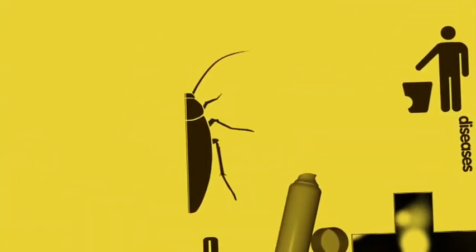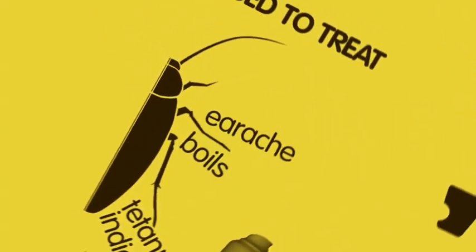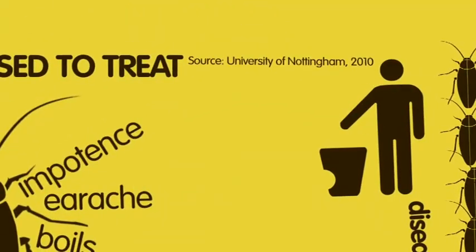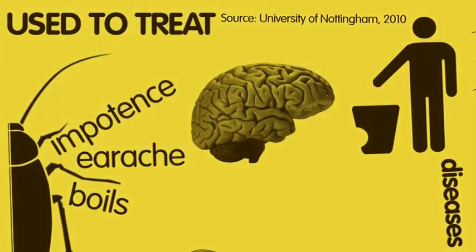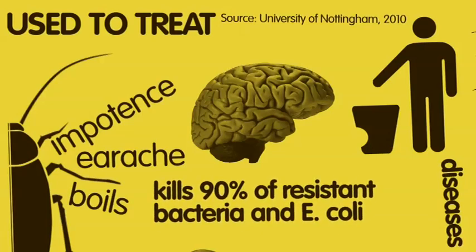And they can actually be good for our health, having been used as treatments for indigestion, tetanus, boils, earache and impotence. A 2010 study found roach brains have powerful antibiotic properties, killing 90% of resistant bacteria and E.coli.